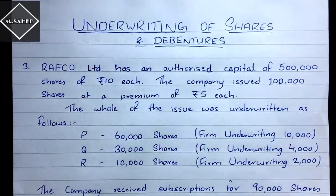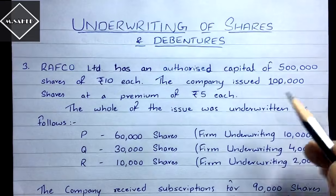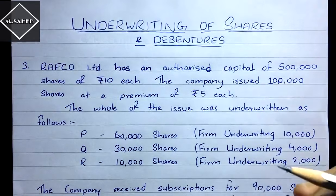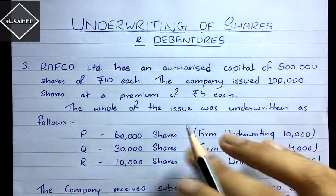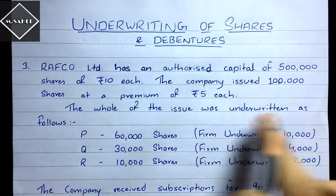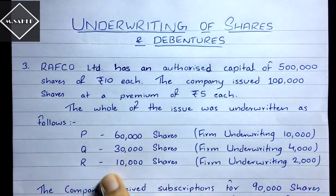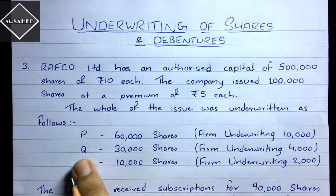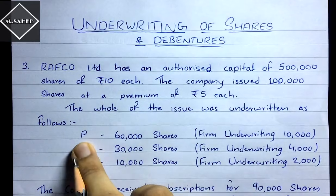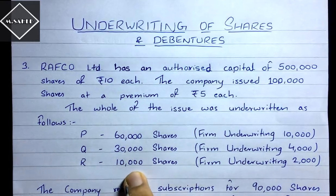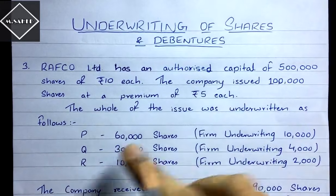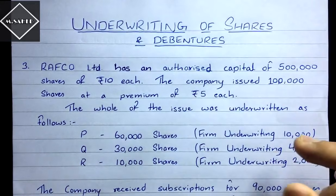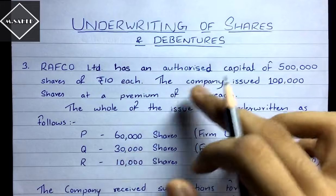We are only concerned about the number of shares, not the value. The whole of the issue was underwritten as follows: P underwrote 60,000 shares, Q underwrote 30,000 shares, and R underwrote 10,000 shares. These are the shares underwritten by each of the three underwriters PQR — this is the agreement between Rafco Limited and the underwriters.